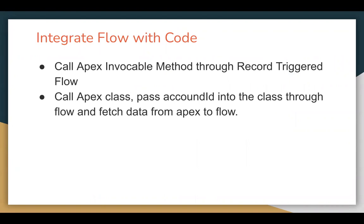We will be integrating our flow with code. The requirement is we need to call an Apex invocable method through a record triggered flow. In my previous video, I demonstrated how we can call an Apex invocable method through a screen flow, and here you will see a similar implementation with the help of record triggered flow.